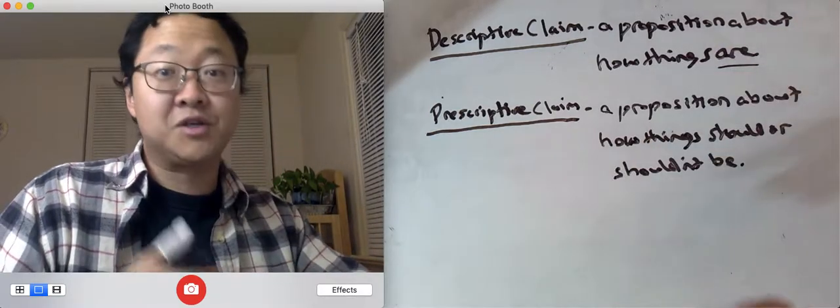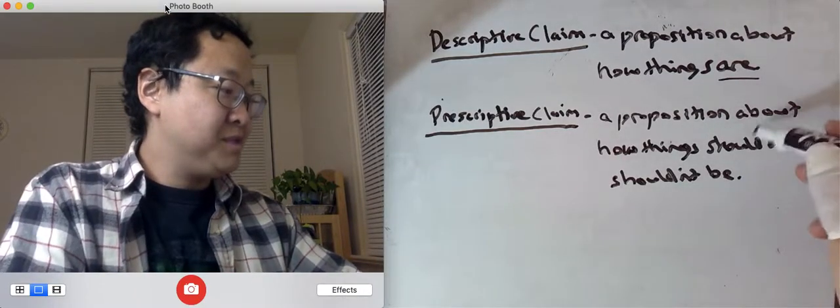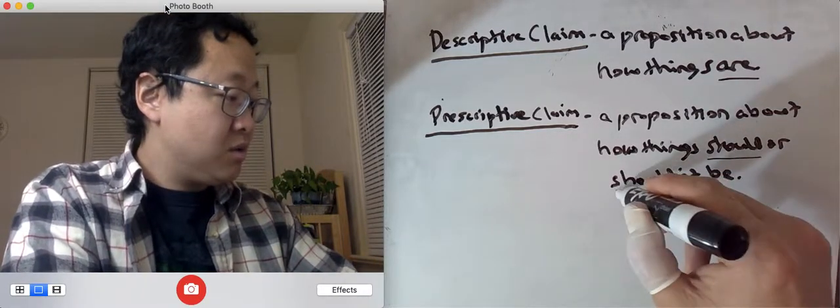So one's about how things are, it describes how the world is. And the other one, a prescriptive claim, is a proposition about how things should or shouldn't be.